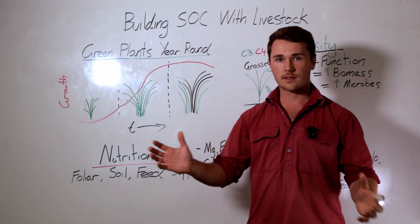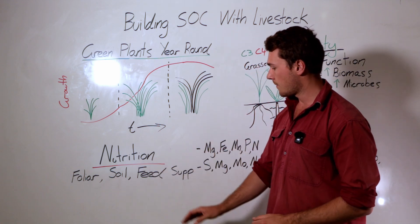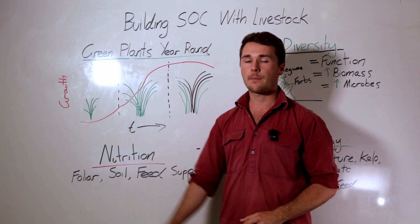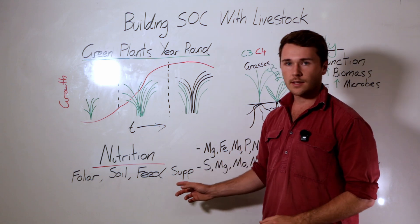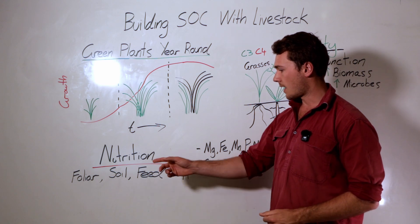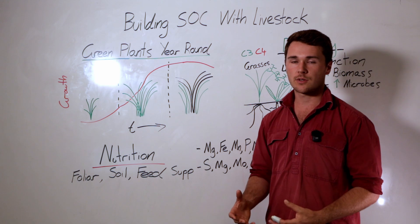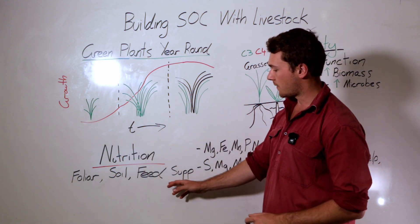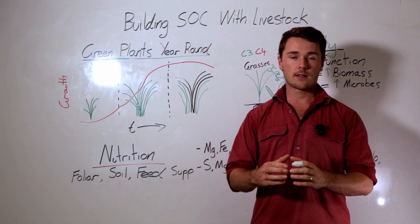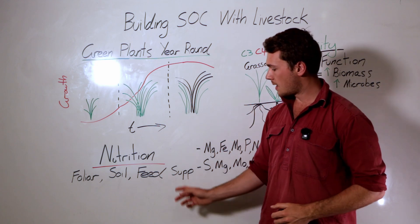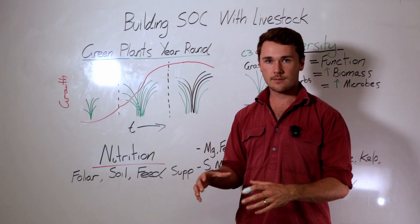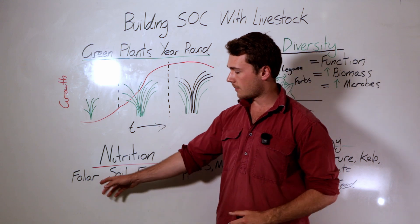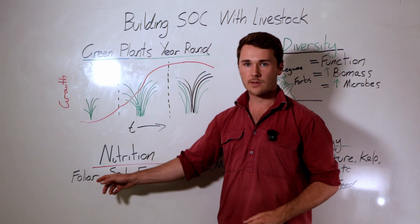Feed supplements tend to be more expensive on a per-nutrient basis compared to foliar, and you don't get as good a distribution with feed supplementation. A foliar gives a very uniform distribution of nutrients across the whole paddock, whereas feeding out creates very high concentrations of minerals in the manure in certain spots. A foliar guarantees even distribution straight into the plant and will be a lot cheaper. Either way, the animal and the plant end up with the nutrition — it just depends on how you want to supply it and your budget.